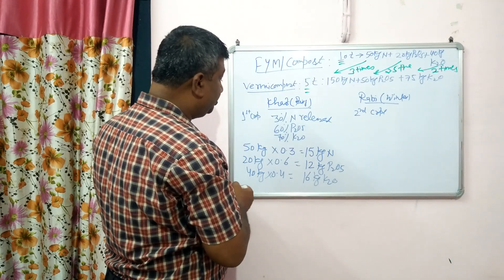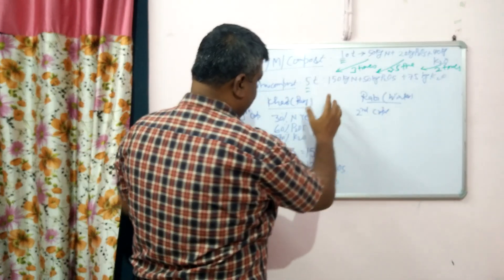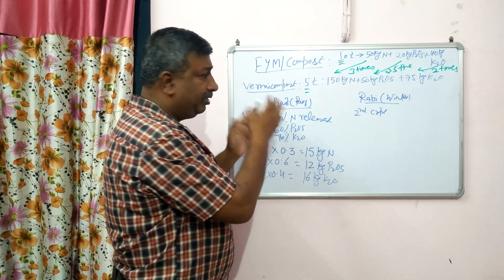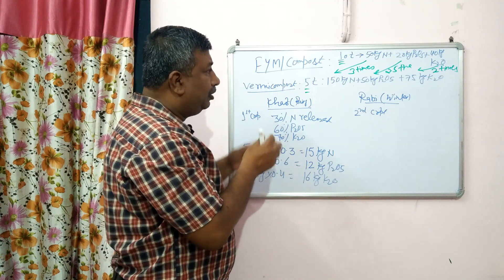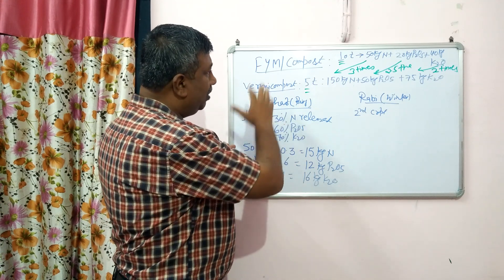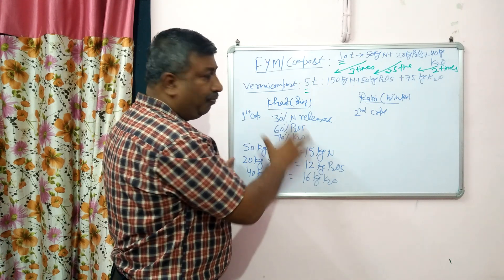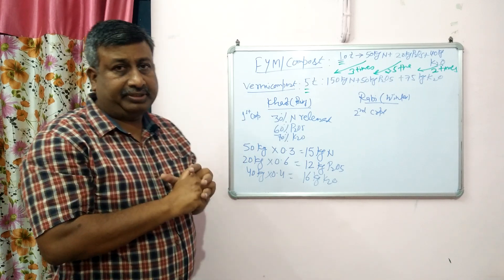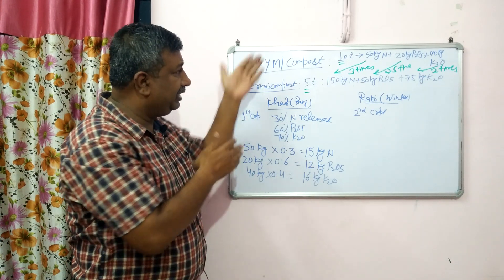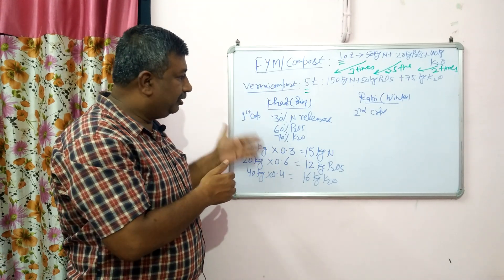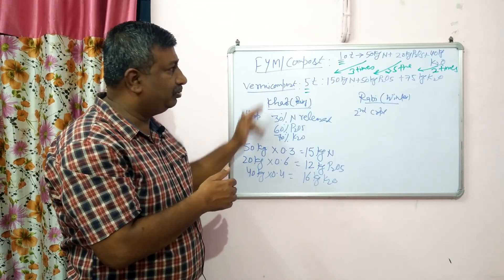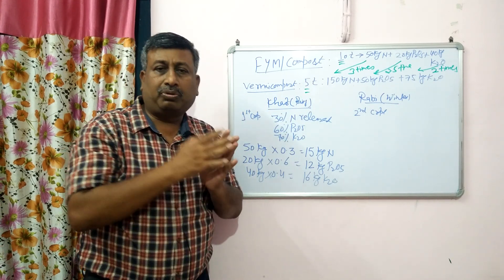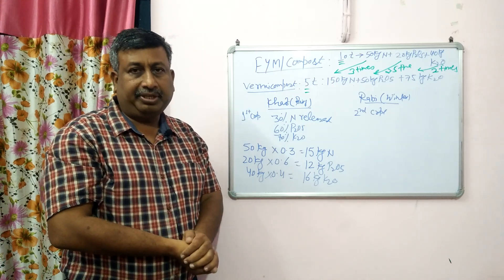In the case of vermicompost, we can calculate similarly. More nitrogen is released in vermicompost because the C:N ratio is less, so more nitrogen is released in the first year. This was the calculation of FYM and vermicompost. We can calculate that if we increase the amount of FYM, then more nutrients are released. These are general average values — the average value depends upon the material from which the compost, FYM, or vermicompost is made. Thank you very much.